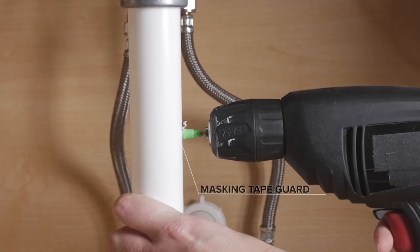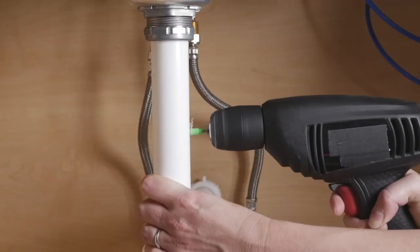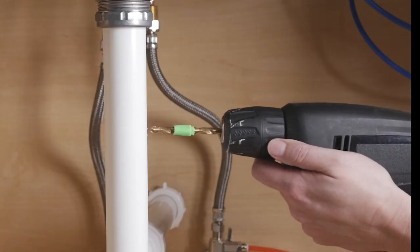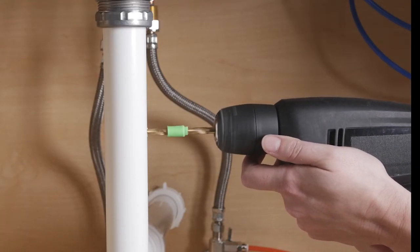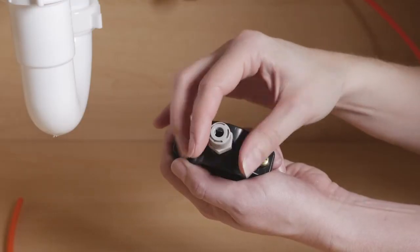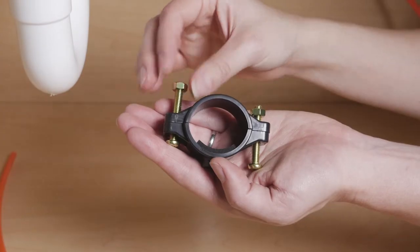Wrapping masking tape or duct tape around your bit will stop the drill from going through to the opposite side. Use a quarter-inch drill bit to enlarge the hole. Next, unscrew the gray quick connector from the saddle of the drain clamp and disconnect the two clamp halves.